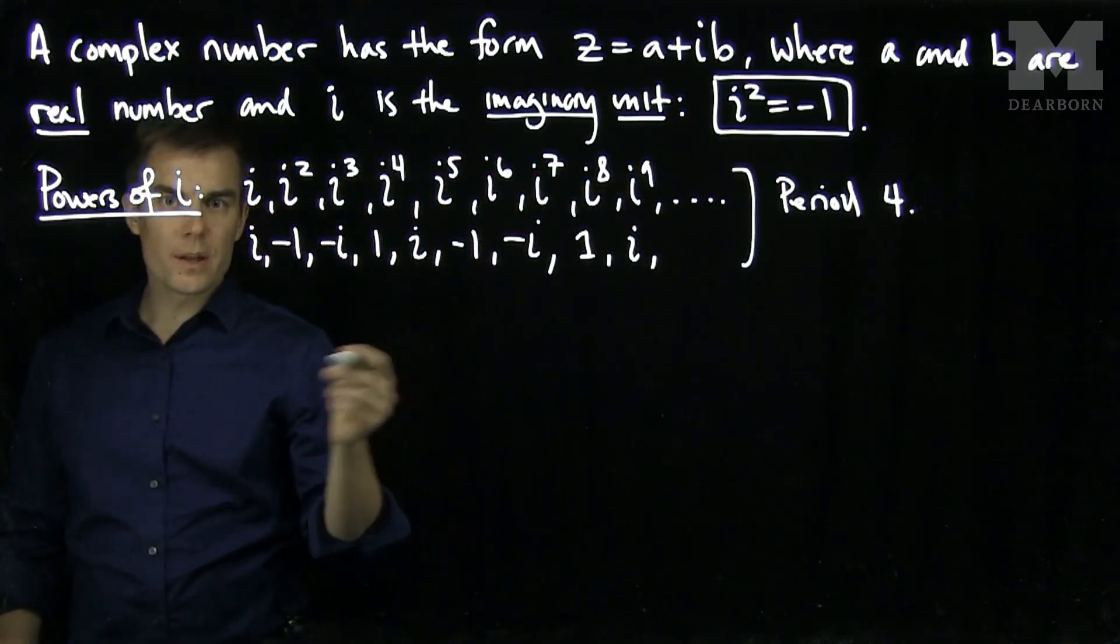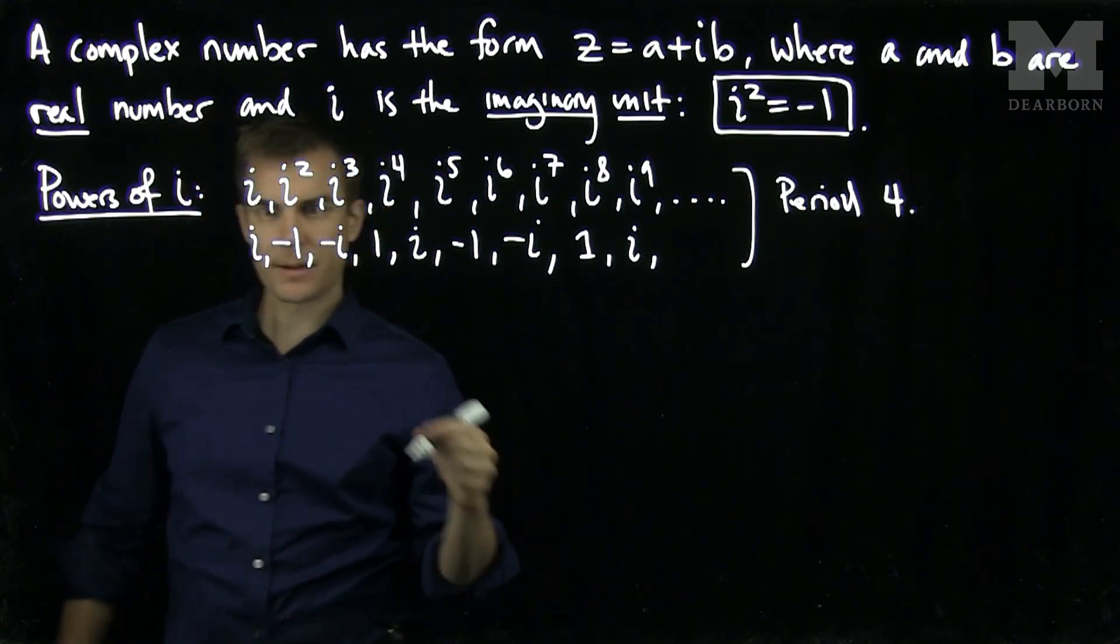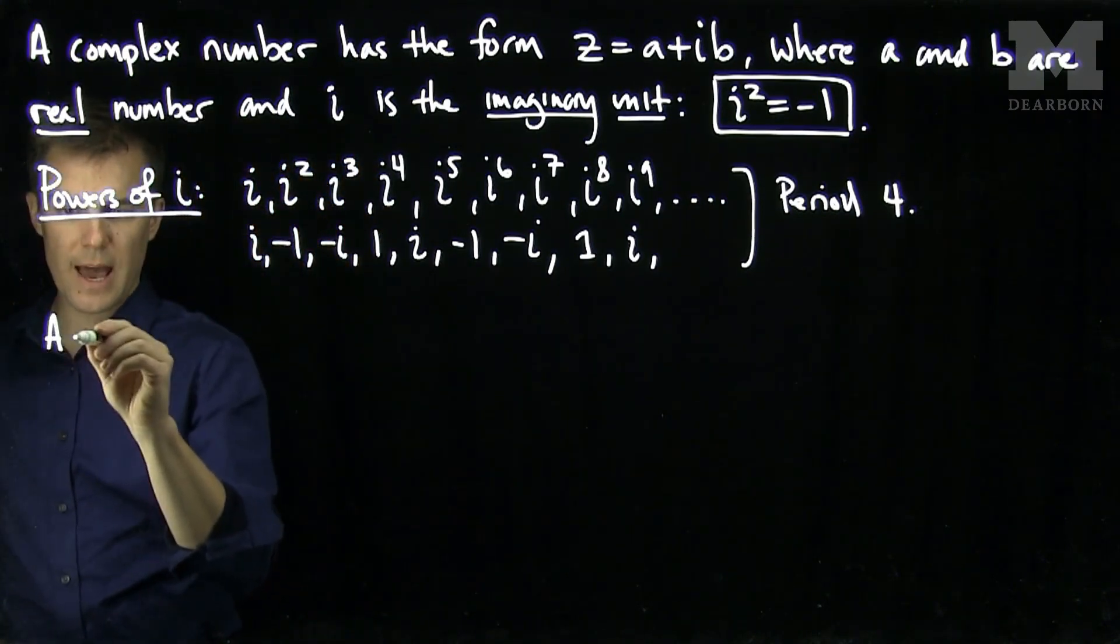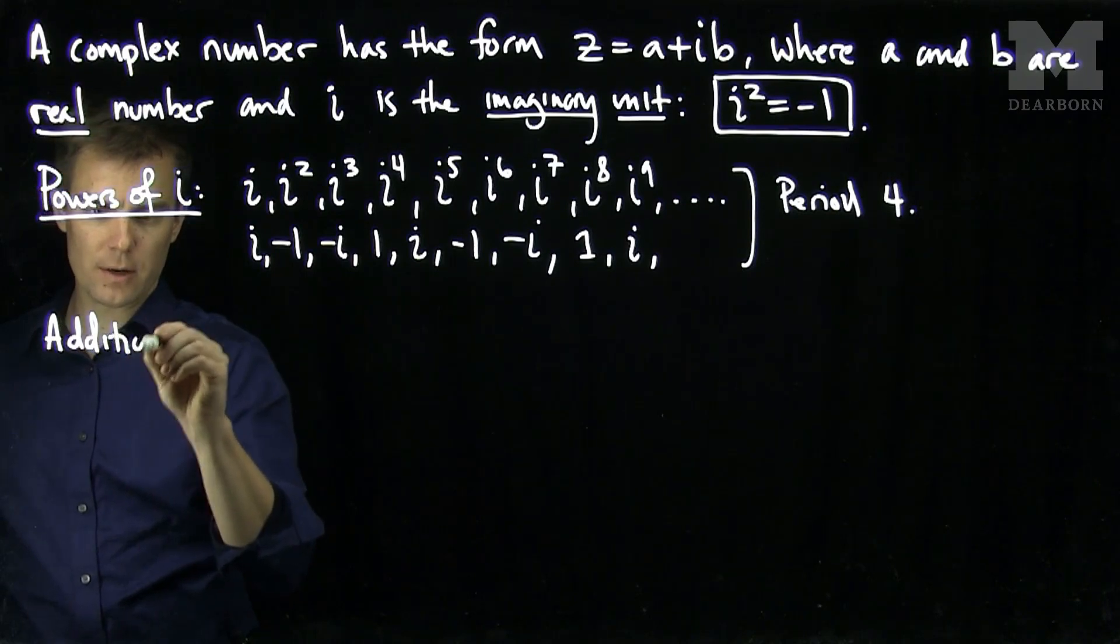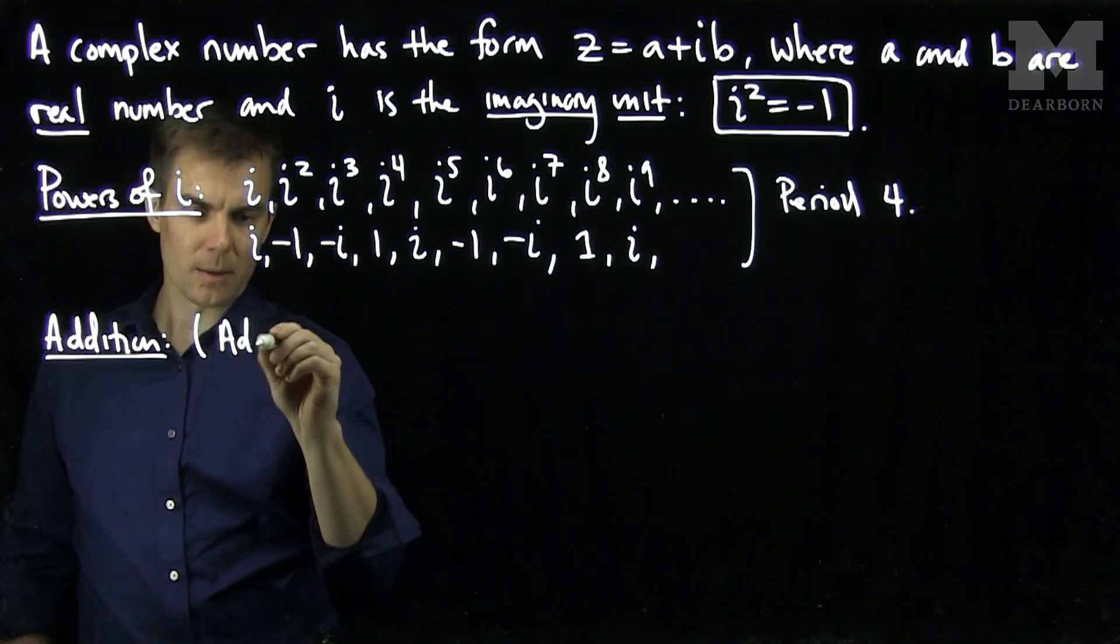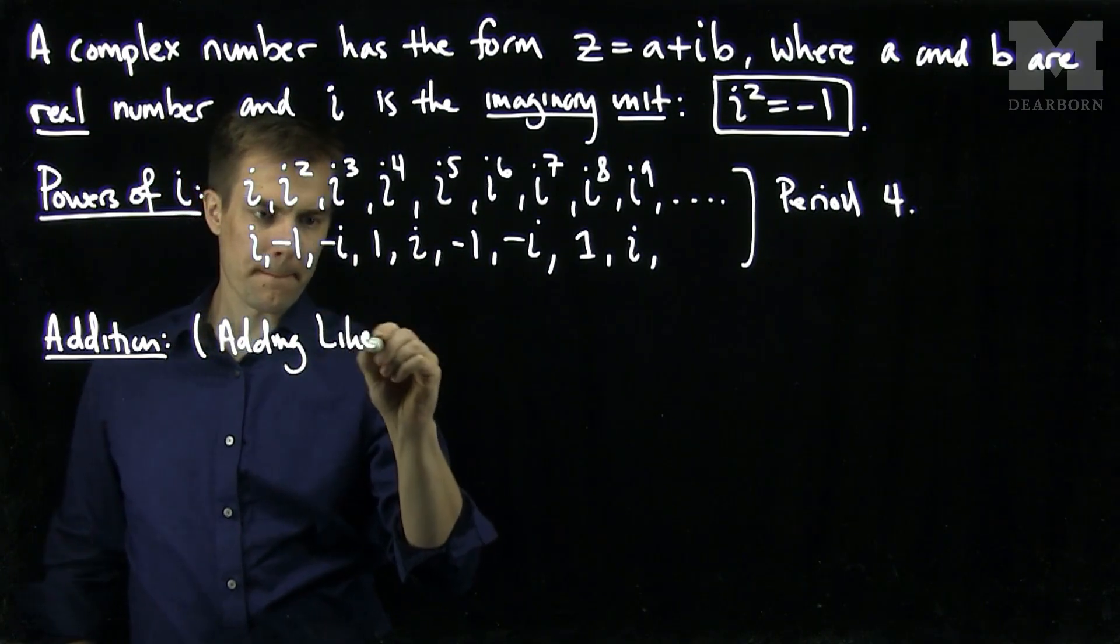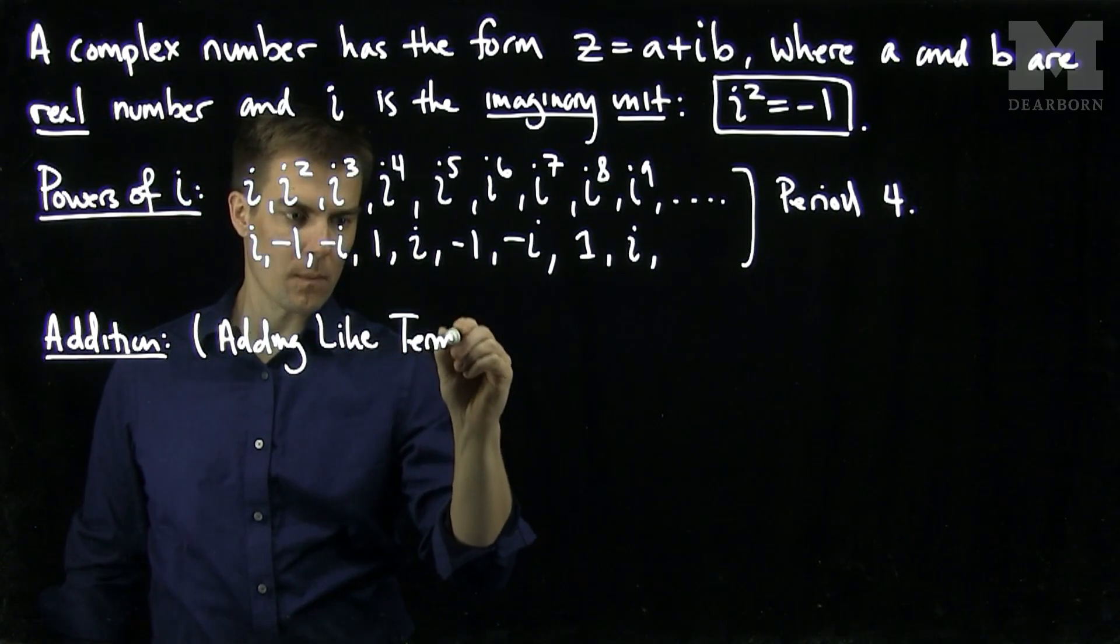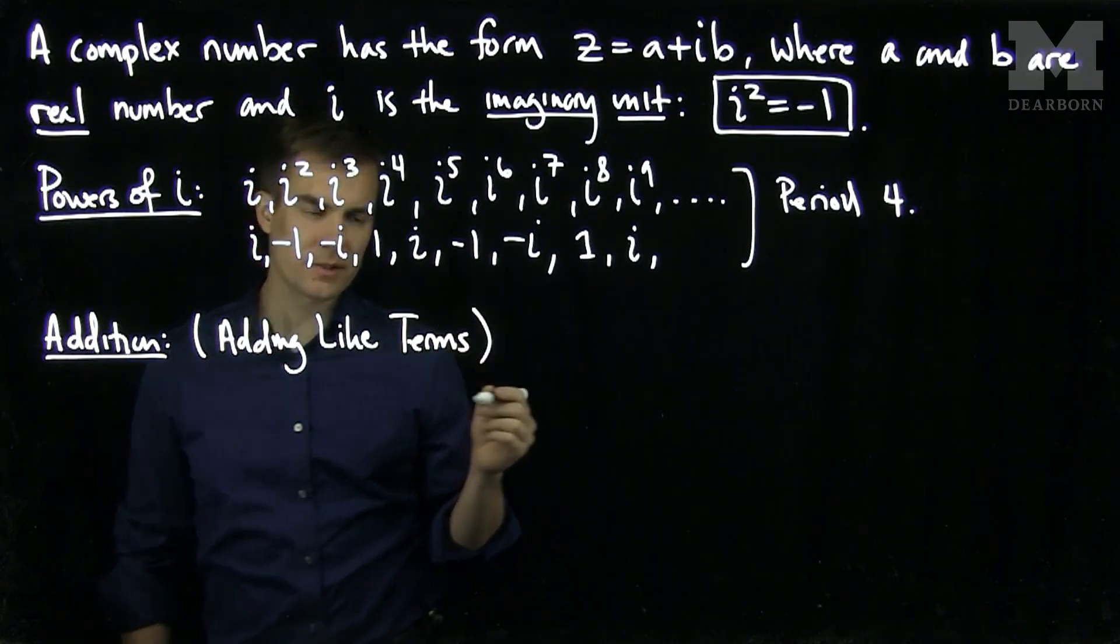Now we can figure out how we can add, subtract, multiply, divide complex numbers. So how do we add complex numbers? Addition. We do addition by adding like terms.